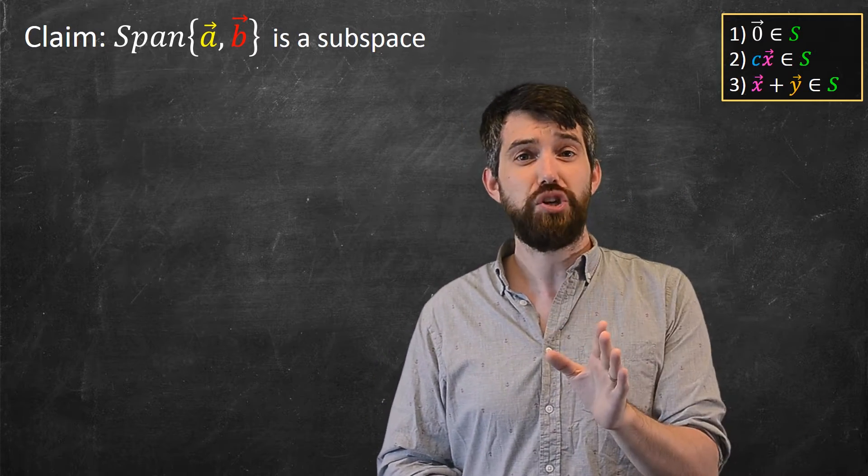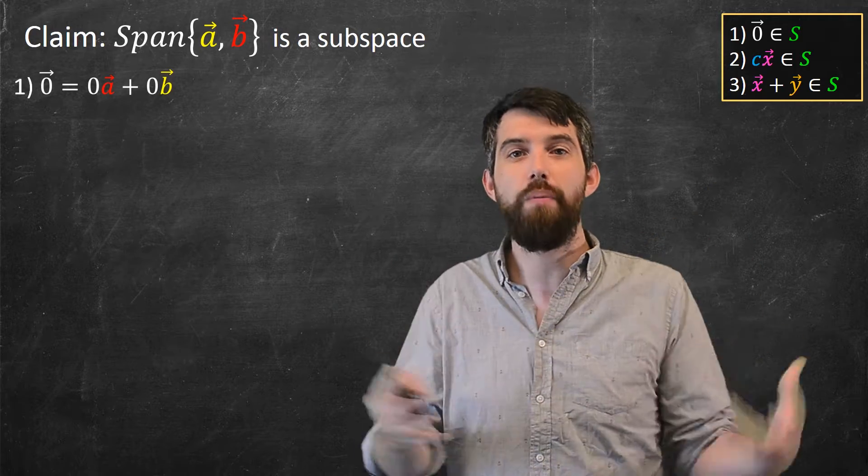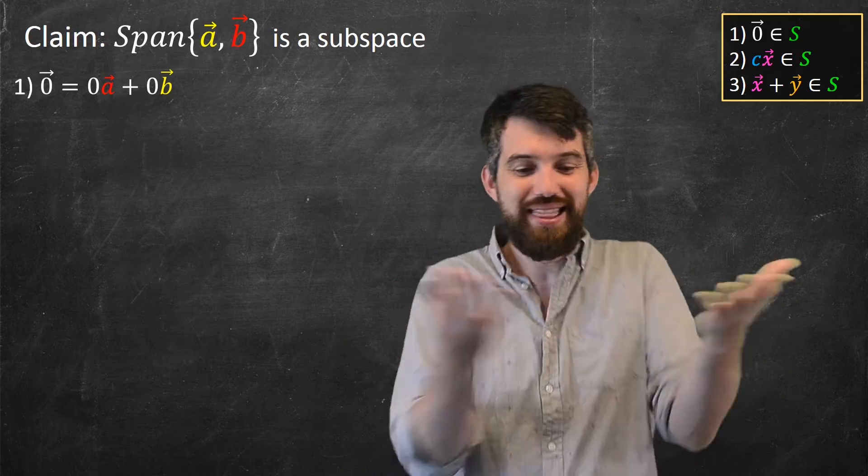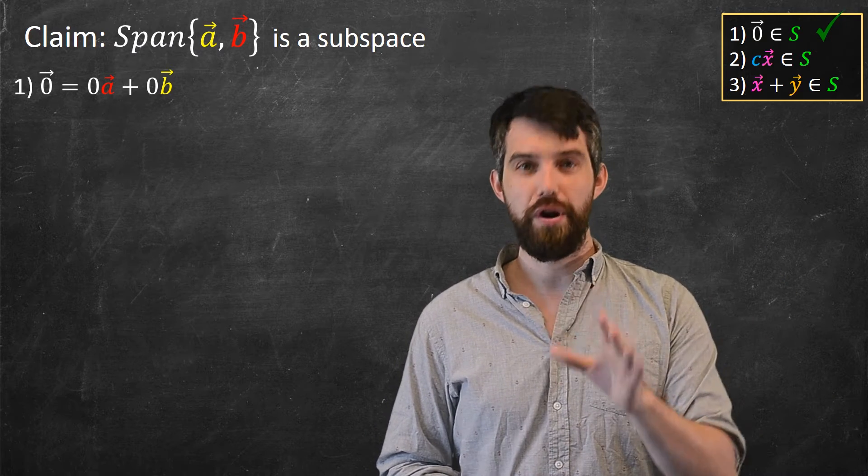Now, first of all, I want to show that the zero vector's on here. So what do I do? How do I write the zero vector as a linear combination of A and B? Well, it's a linear combination where you take zero A and zero B. That's going to give me the zero vector. So indeed, I have my first property. Alright, wonderful.